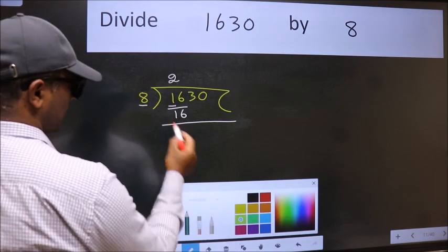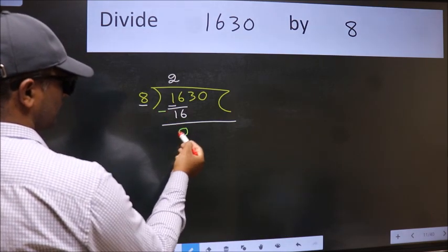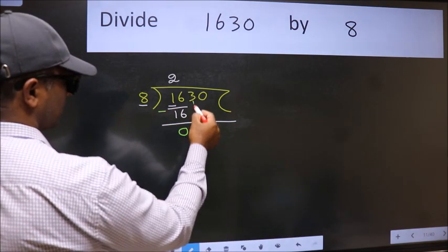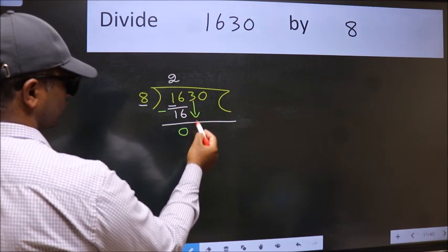Now we should subtract. We get 0. After this, bring down the beside number. So 3 down.